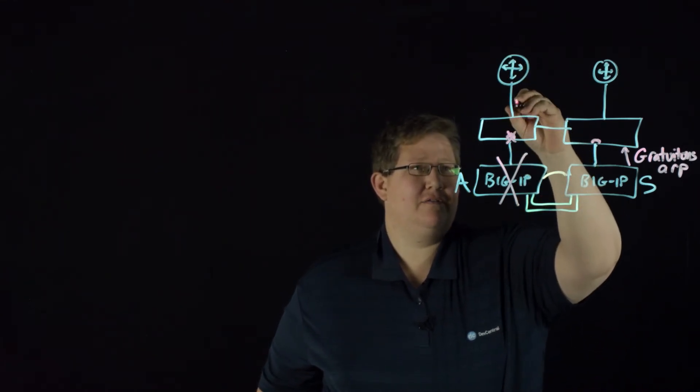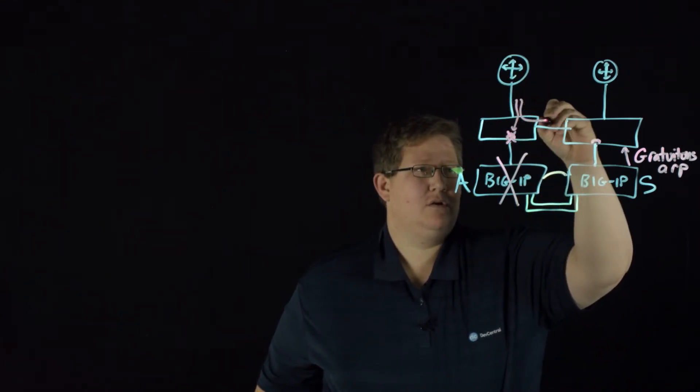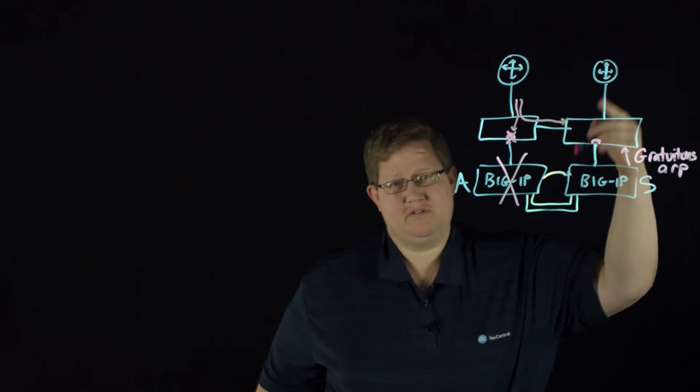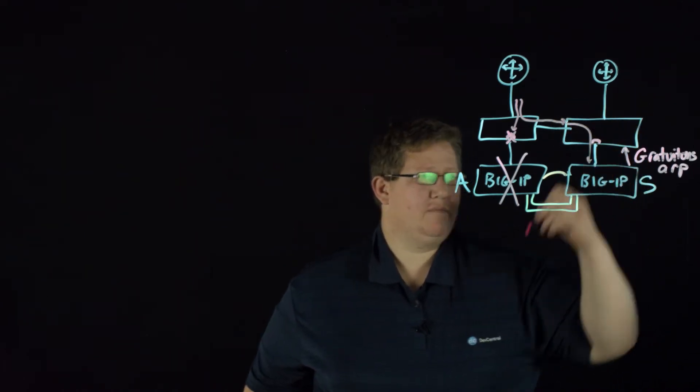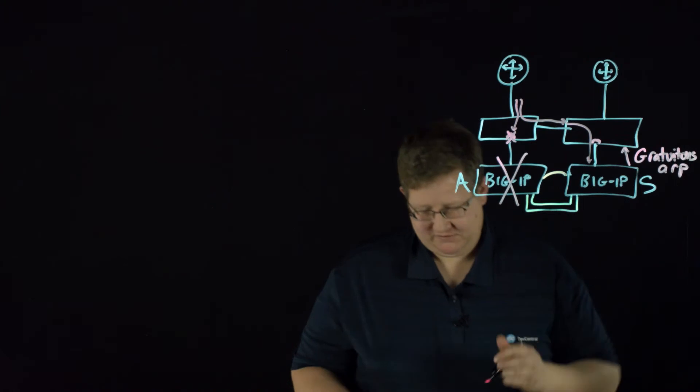So this router knows to now, instead of sending traffic down this way, sends it to this switch. And of course this switch has already updated his table and it comes back down that way. So that's how MAC Masquerade works.